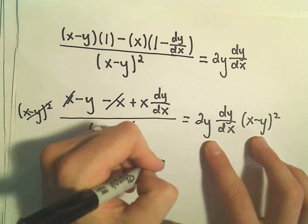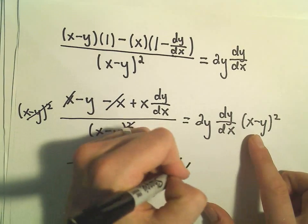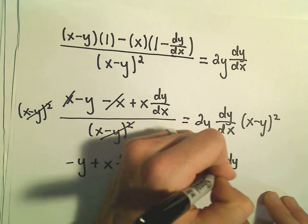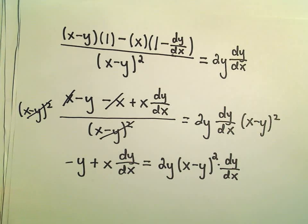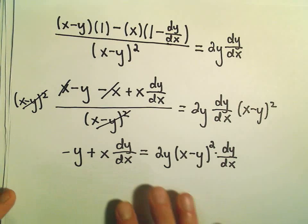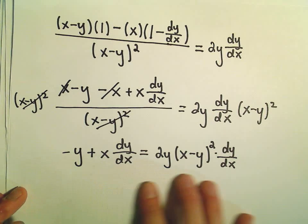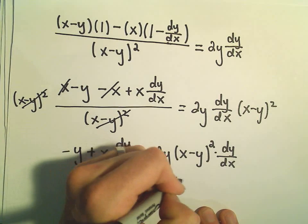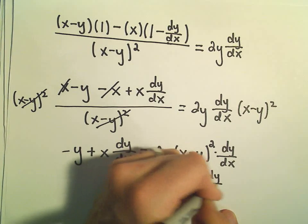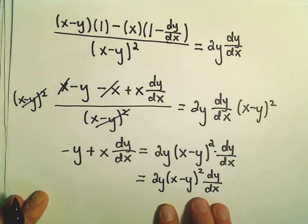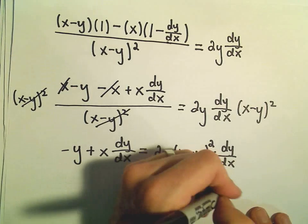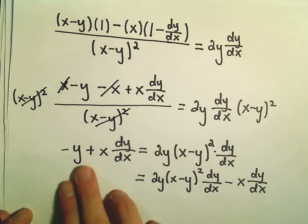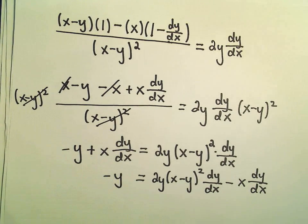On the right side, I'm going to pull all the variable stuff out front. So we have 2y times x minus y squared times dy over dx. Getting pretty close now. I want to put all the dy dx's on one side, so I'll pull all those dy dx's over to the right side. So I'll leave the original stuff over here just like it was, but then I'll subtract the x times dy over dx from both sides. And then we'll have negative y left over on the left.